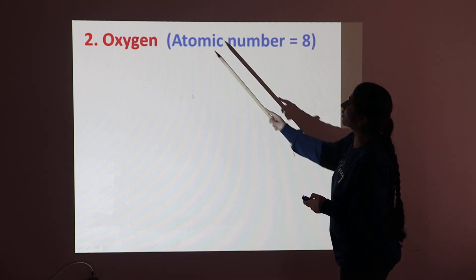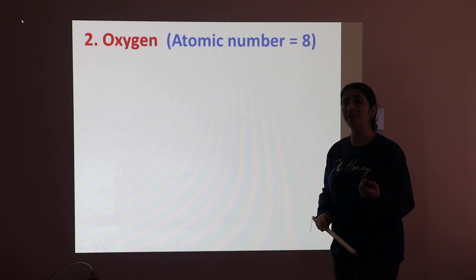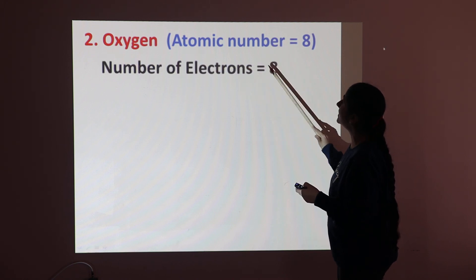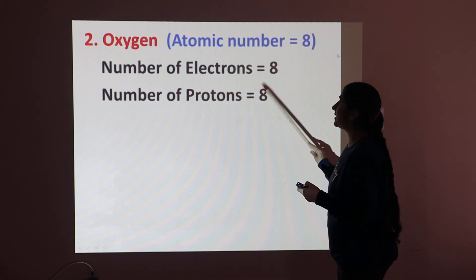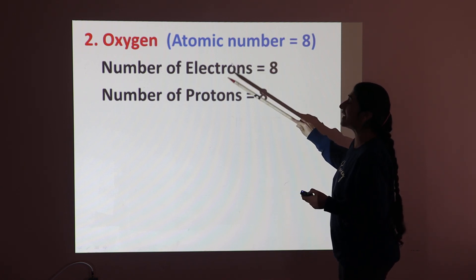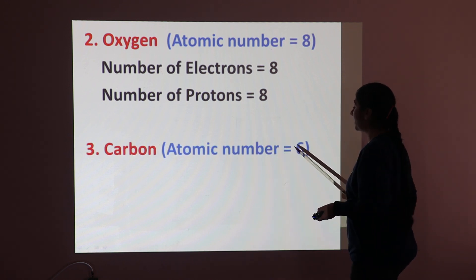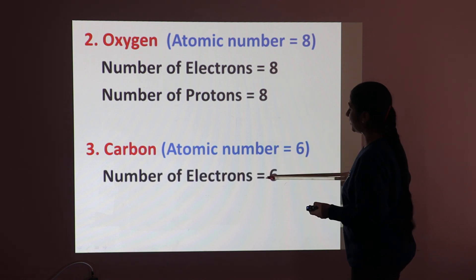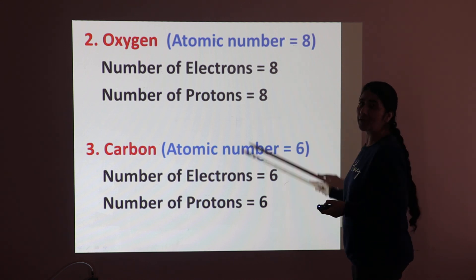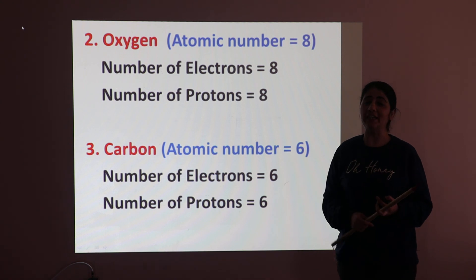The second example is oxygen, whose atomic number is 8. So the number of electrons is 8 and the number of protons is also 8, since atomic number equals the number of electrons and protons. The third example is carbon, whose atomic number is 6 — the number of electrons is 6 and the number of protons is also 6. This is how atomic number helps calculate electrons and protons in an atom.